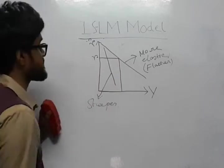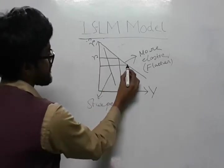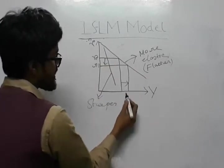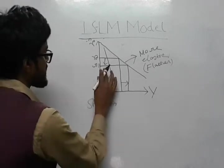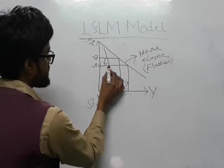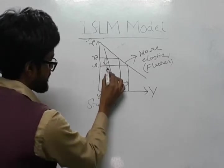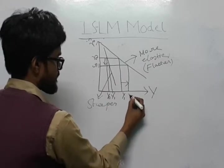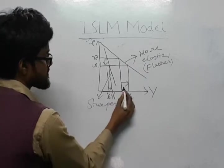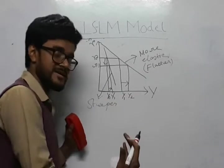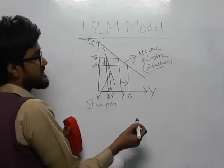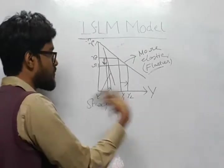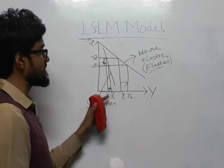What is the concept behind it? See, when R falls on this flatter IS curve from R0 to R1, the increase in Y is this much. Now, in this case, the increase in Y is this much. So, when it is more elastic, in case of flatter IS curve, you see a decrease in R causes an increase in Y, which is more than which is in the case of steeper IS curve.